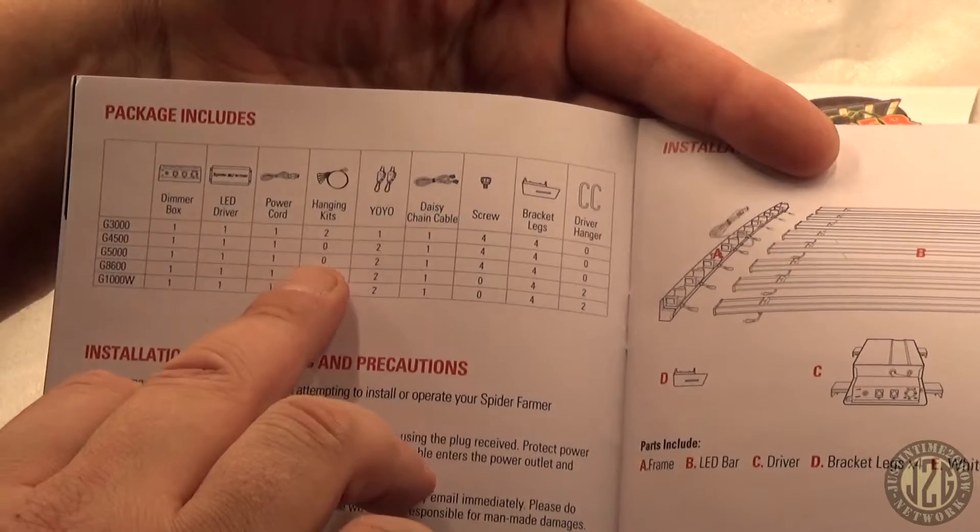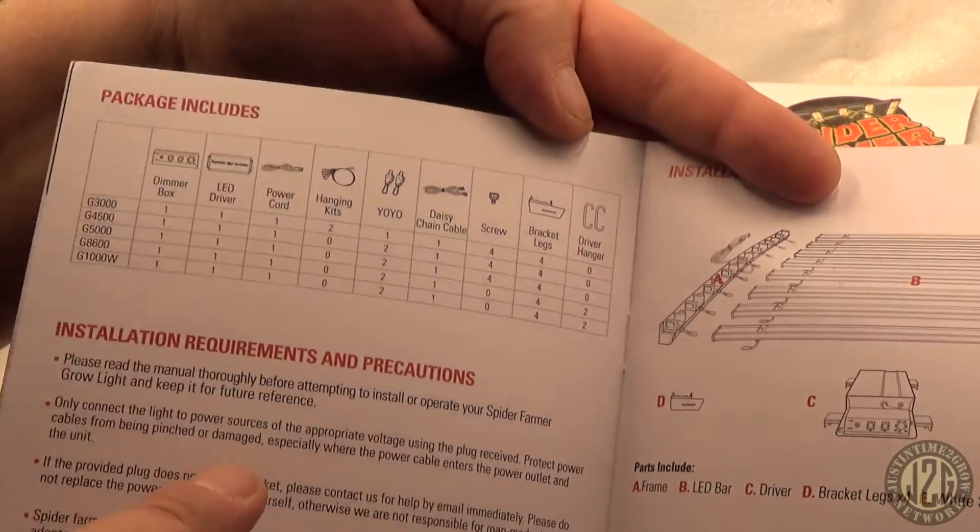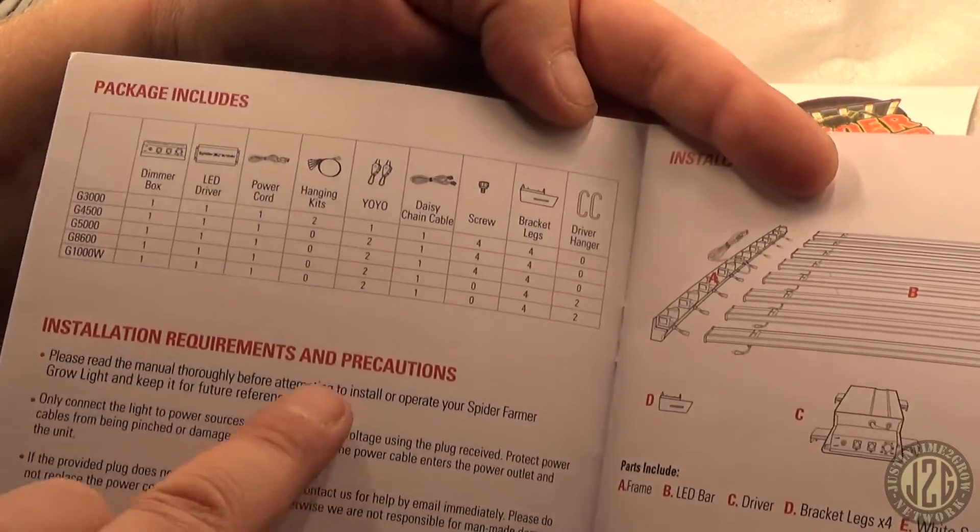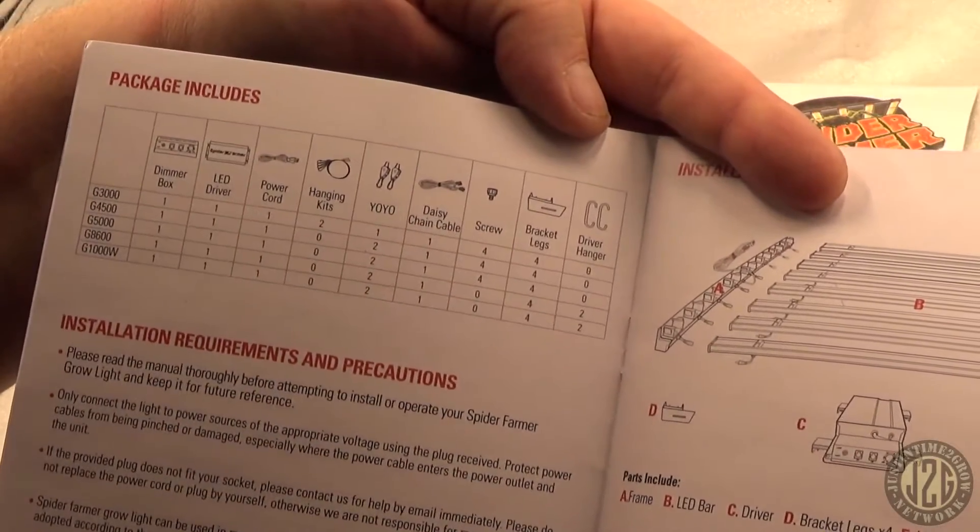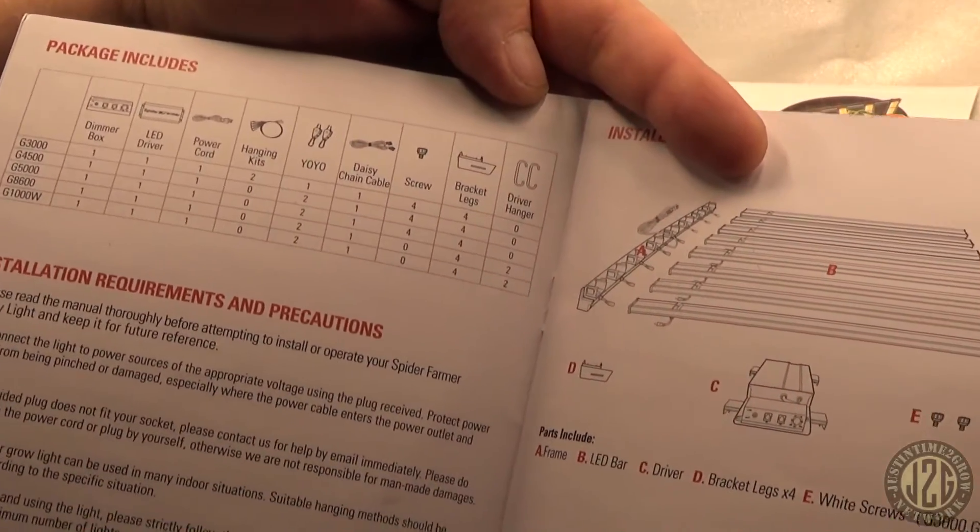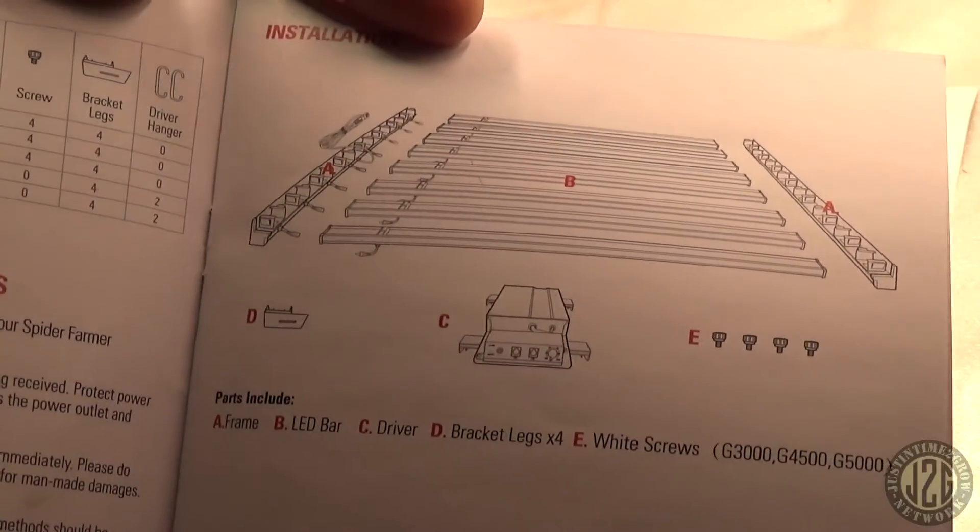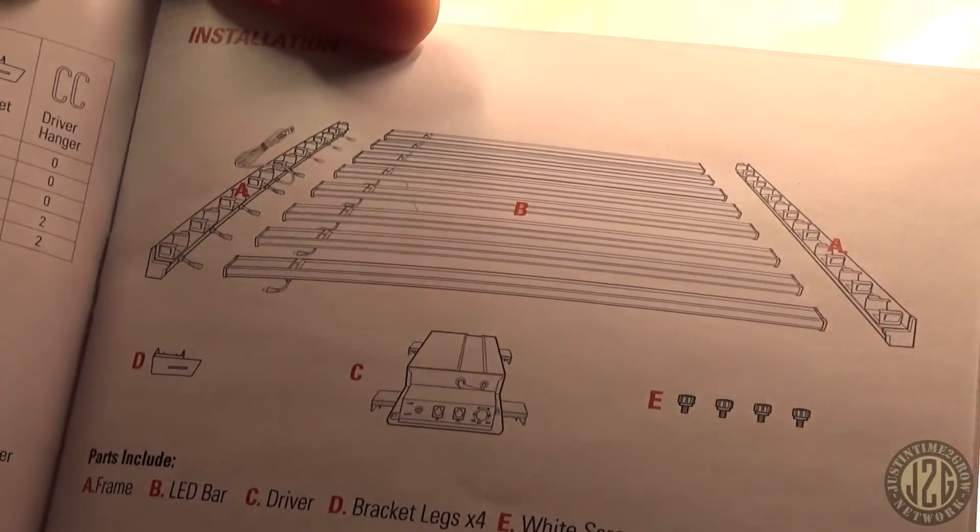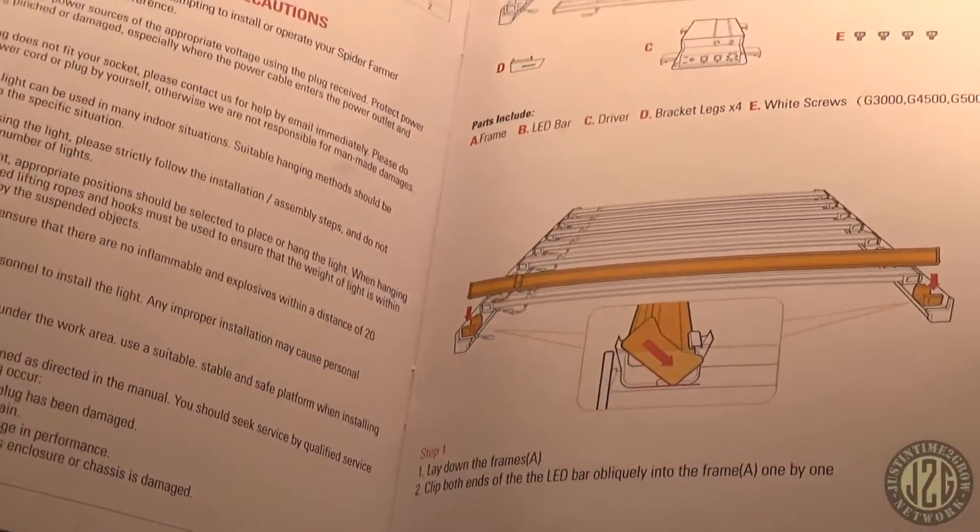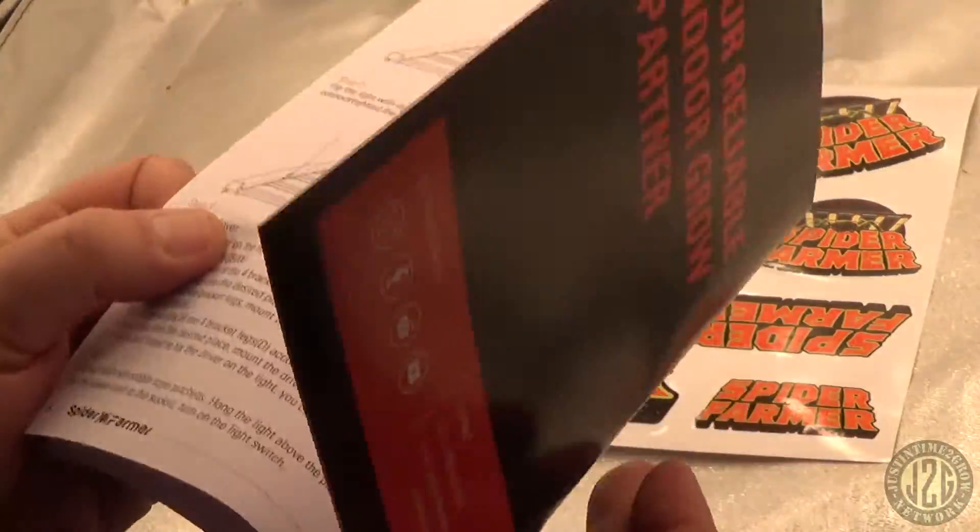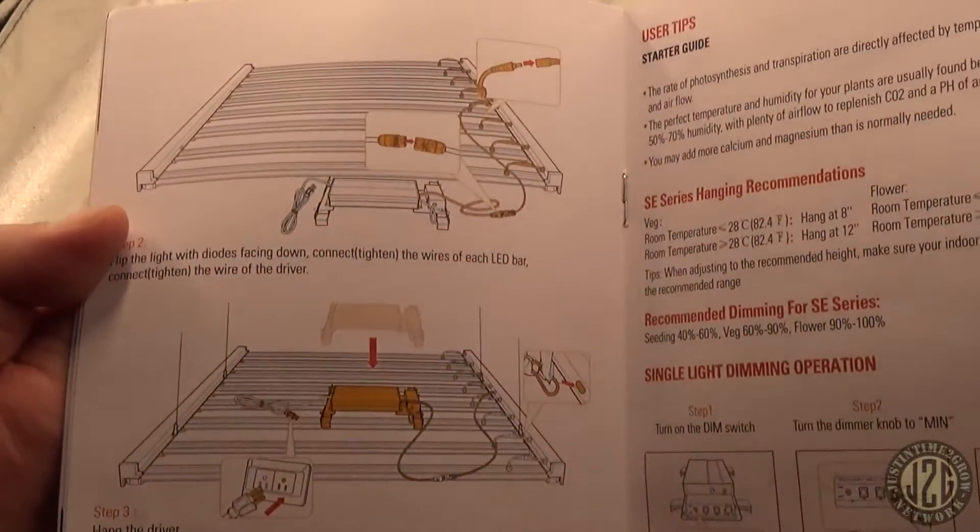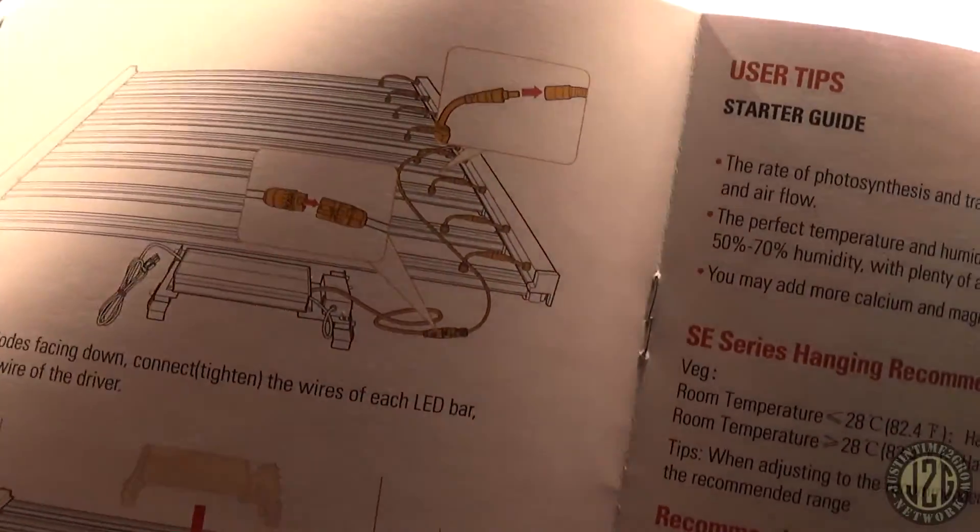So the SE5000 does not come with a hanging kit like it says right there, no hanging kit. The only one that comes with a hanging kit is the SE3000, but you do get two sets of rope ratchets. No driver hanger, pretty slick. It goes together really really easy. Look at this, you just take the bars and you clip them in and then plug them in. It's stupid simple. This is probably the best design I've seen as far as putting one of these bar lights together. I think they really nailed this design.